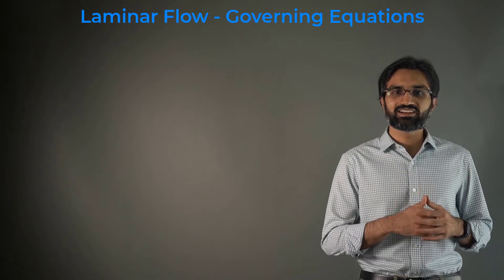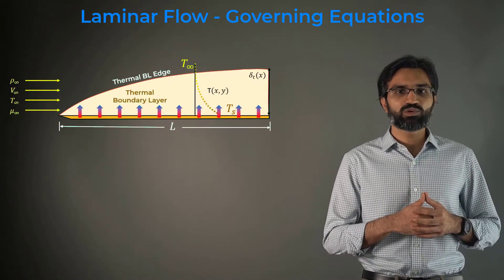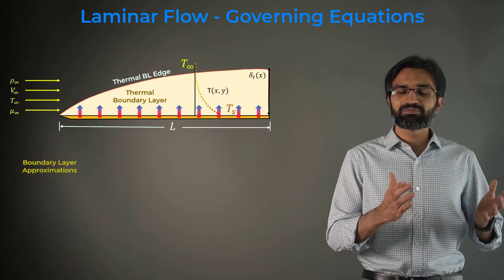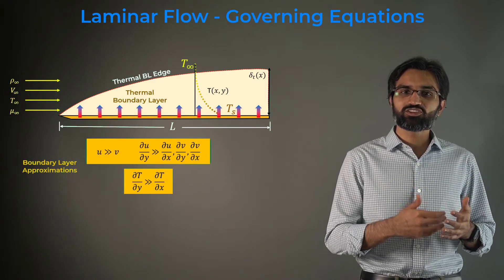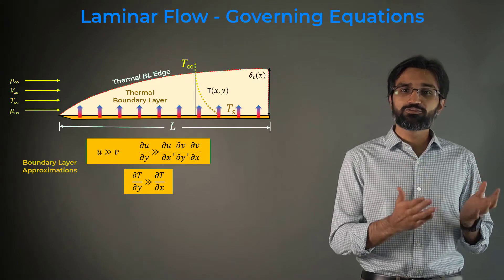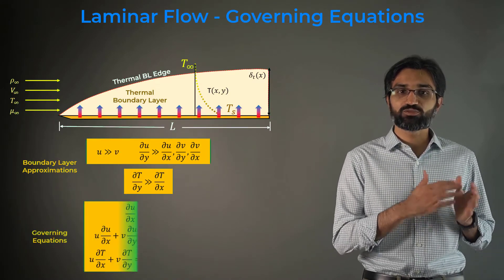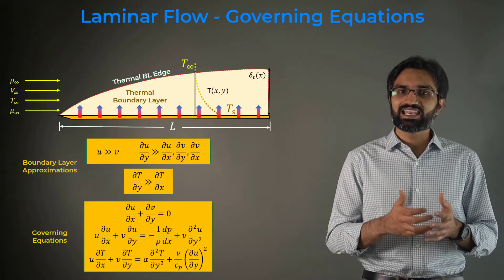Using the boundary layer approximations, the 2D governing equations of fluid motion are simplified. Based on these approximations, we obtain the following boundary layer equations for steady incompressible laminar flows.